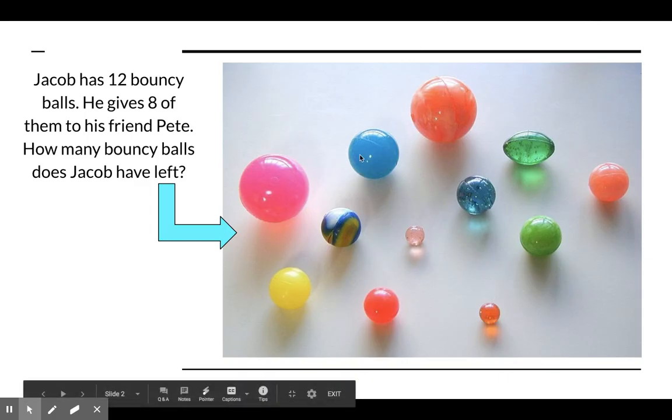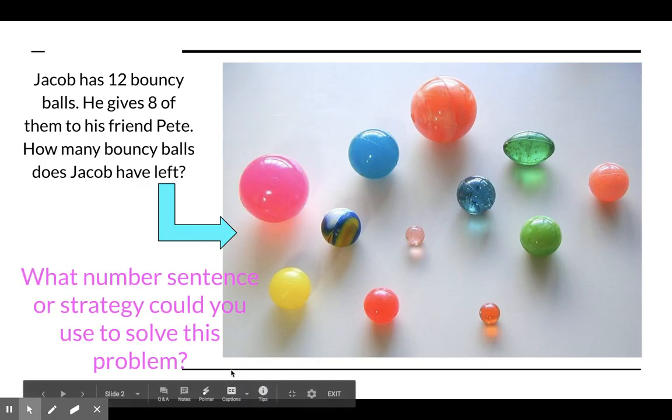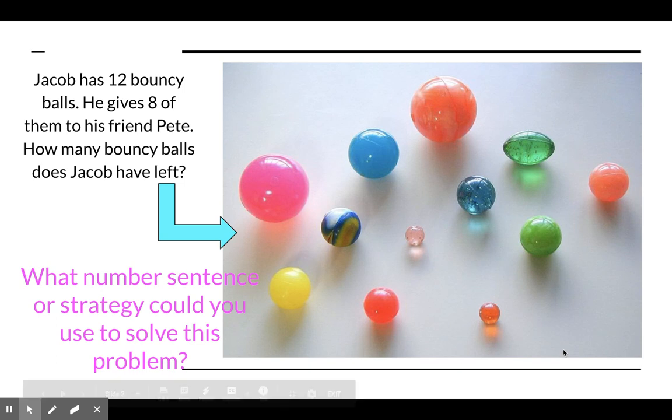Here's a picture of Jacob's 12 bouncy balls. Now remember, he gives 8 of these to his friend Pete. I want you to think of what number sentence or strategy you could use to solve this problem. Think.